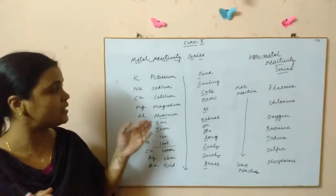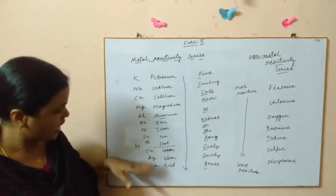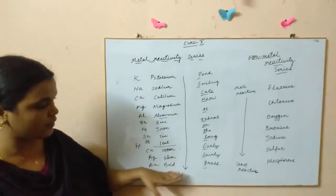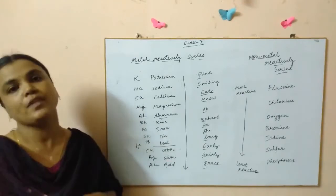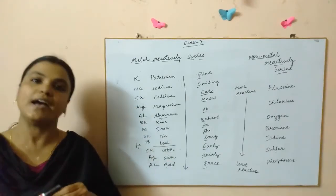You can see all these metals which are on top above the hydrogen, they all come under that category of metals which are more reactive than hydrogen. And these four - copper, silver, gold and platinum - they are the metals which are lesser reactive than hydrogen.